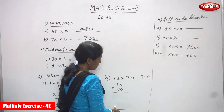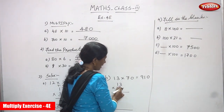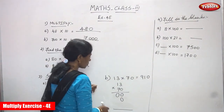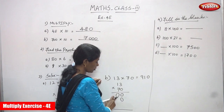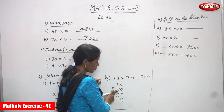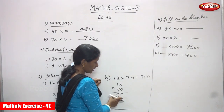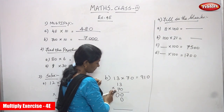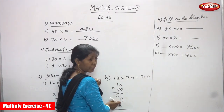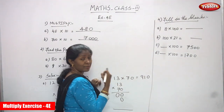Otherwise you can do the normal method. 13 into 70: first multiply by 0 — 0 into 3 is 0, 0 into 1 is 0. Then multiply by 7, which is in the tens place. So in the ones place you must write zero, because you are multiplying by 10.